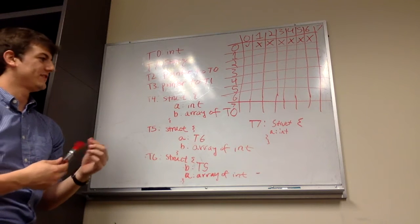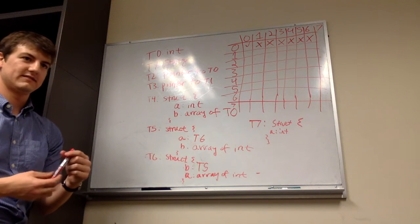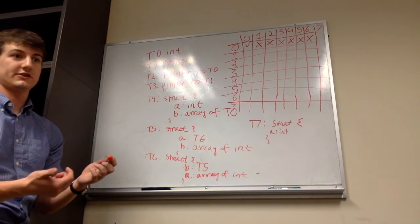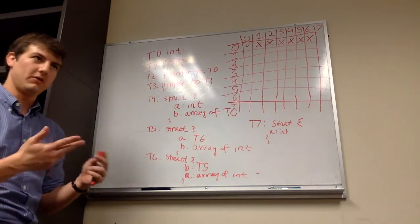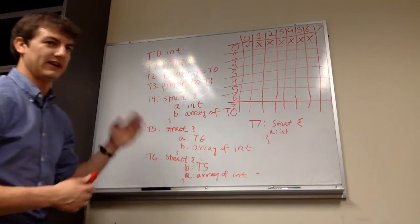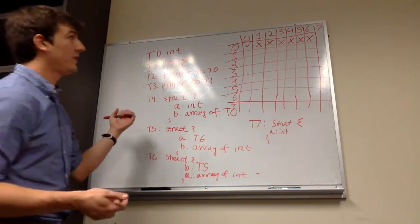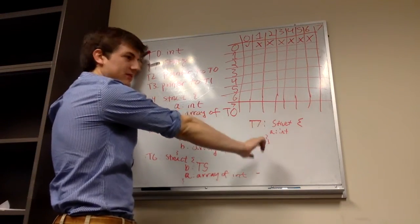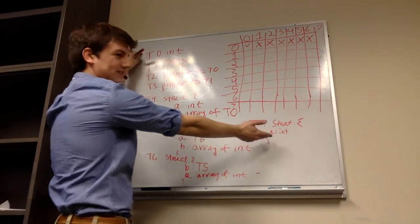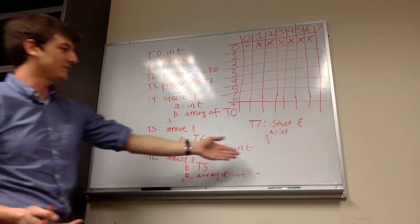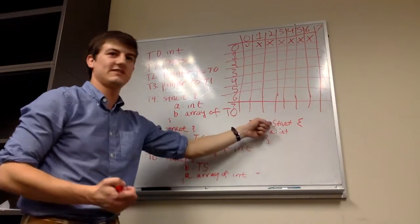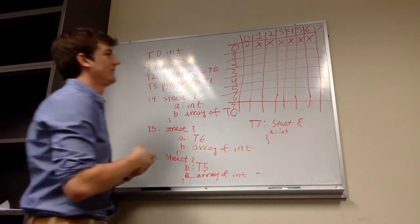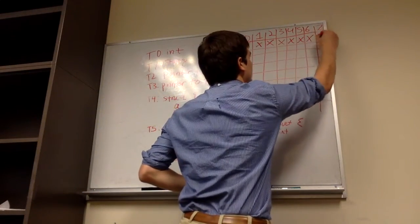What's the definition of two structures being structurally equivalent? They're both structures, and they both have the same number of fields, and all of their fields are structurally equivalent in order. So even though the C compiler would lay these out the same way and take up the exact same space, they're not structurally equivalent because the programmer said one is a structure and the other is an integer. So those are definitely different — they're still not structurally equivalent.